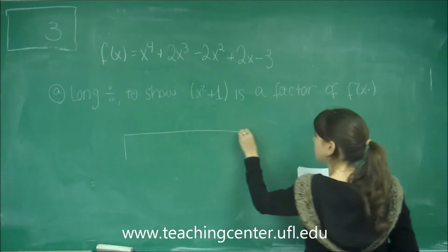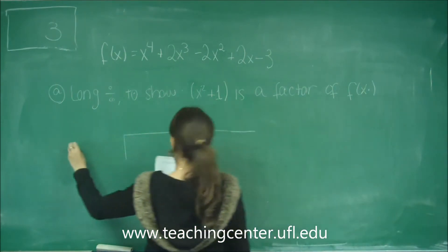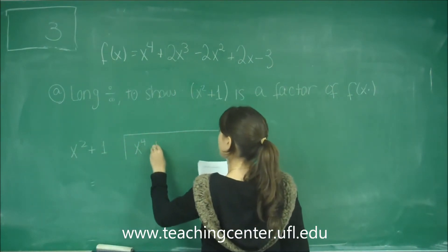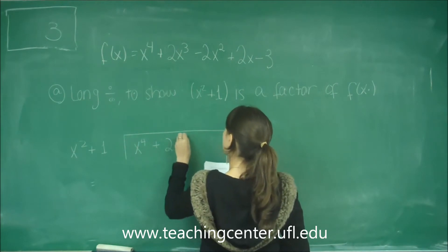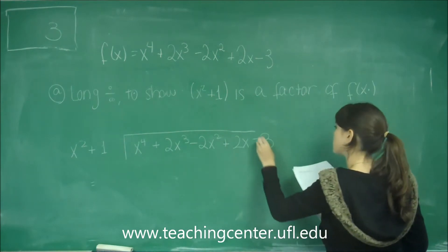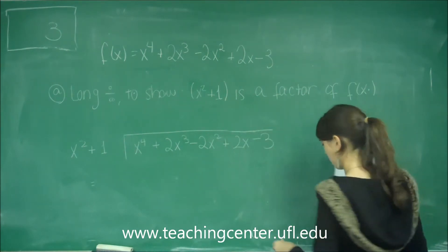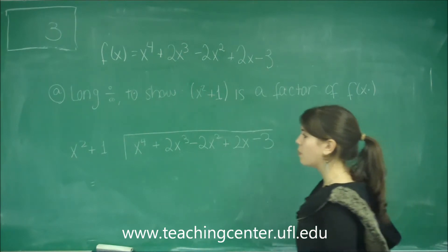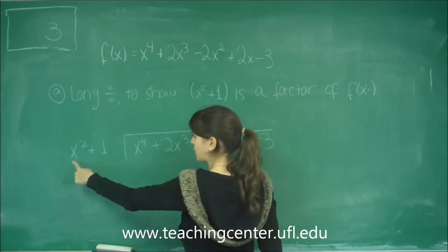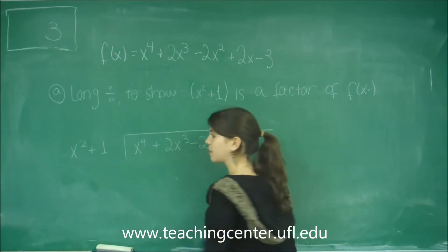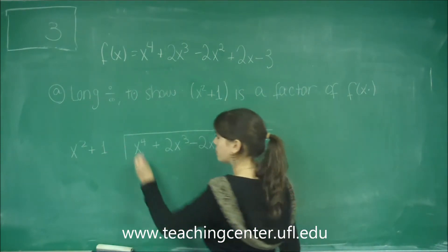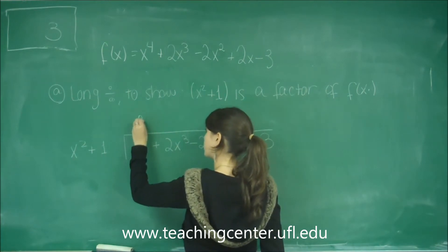Let's put f of x under here and divide it by x squared plus 1. So we have x to the 4th plus 2x cubed minus 2x squared plus 2x minus 3. What we need to do is think of what can I multiply to x squared to get x to the 4th. So I need to multiply two more x's, x squared.